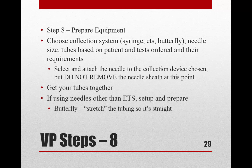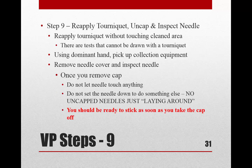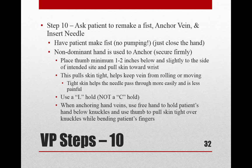Get your supplies ready — I like to alcohol the site first, then assemble my needle, grab my tubes, and make sure everything is nearby. Position everything on the same side as your free hand so it's easy to reach, and make sure nothing will roll away. Don't put your tray on the patient's bed or tray table. When ready, reapply the tourniquet, uncap and inspect the needle for defects, then anchor the vein using your non-dominant hand — thumb goes one to two inches below and slightly to the side of the intended site, pulling the skin down toward the wrist to keep the vein still and prevent rolling.